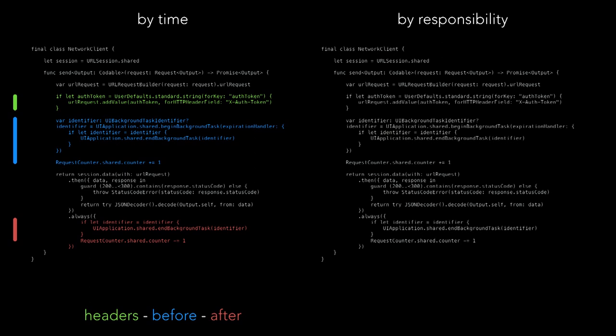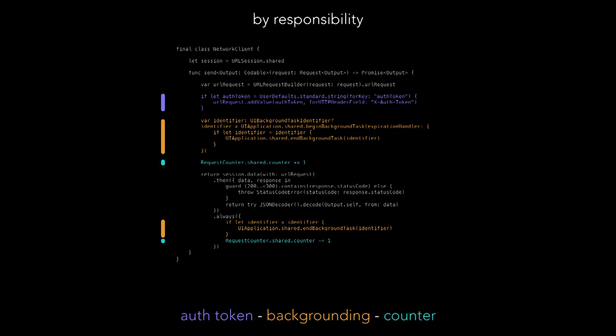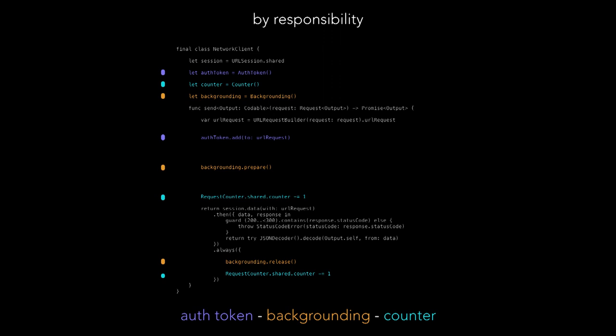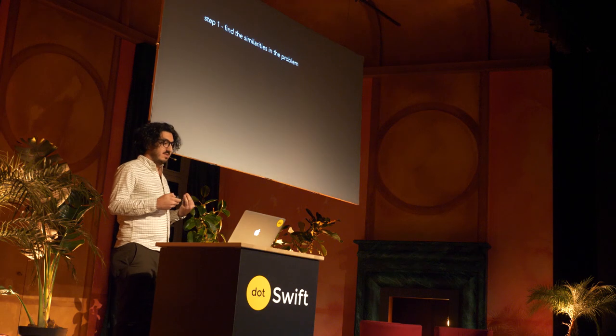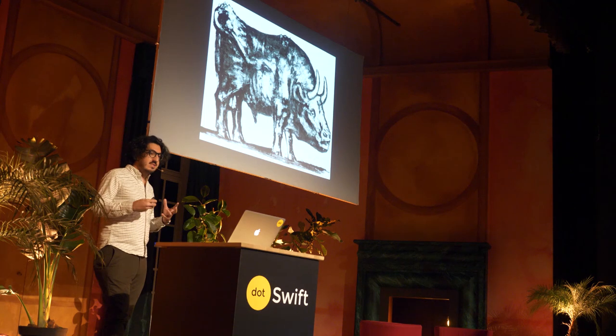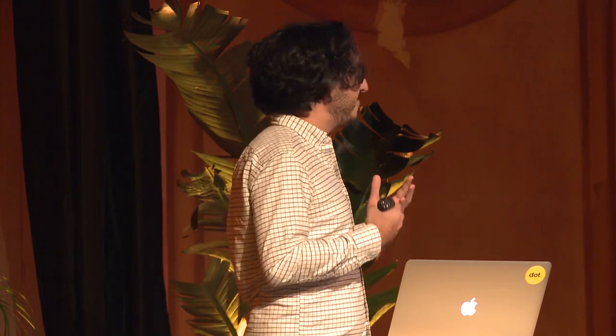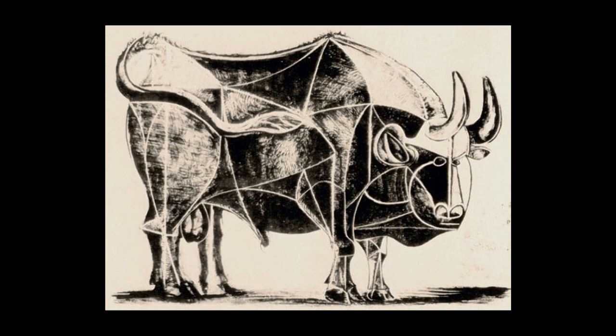These slices of time are going to be important later, but we need a different way to slice our code. Instead of time, we can look at the responsibilities we've already talked about: our auth token, our background code, and our request counter. If we extract each bit into its own class, we can get to a point where the code is abstracted and our state is hidden away inside our backgrounding object. The artist is frustrated with the complexity of the bull and seeks to find the lines that define what the bull really is — to find the essence of the bull.